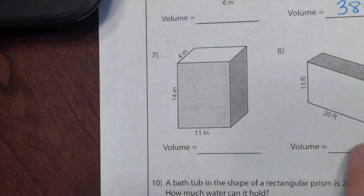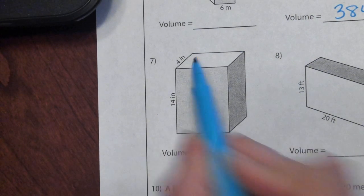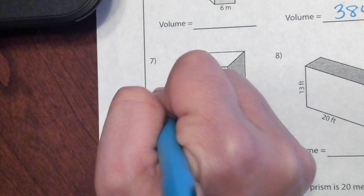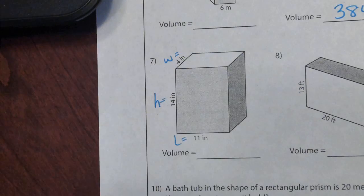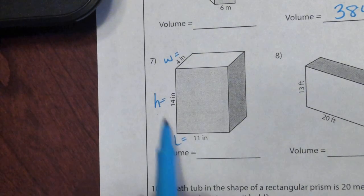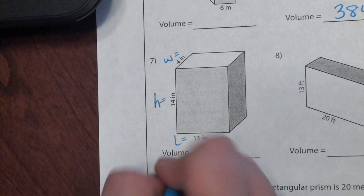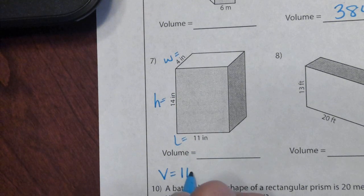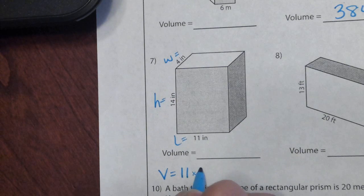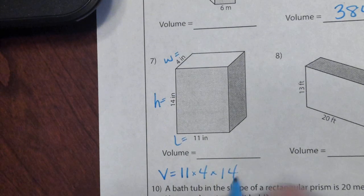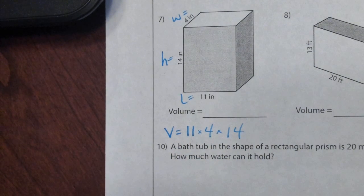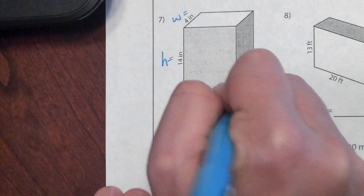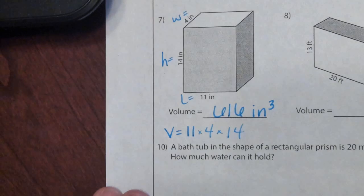Another rectangular prism, because our bases are rectangles. We have a height, we have a length, and we have a width. So remember, length times width times height. Eleven times four is 44, times 14, we get 616 inches cubed.